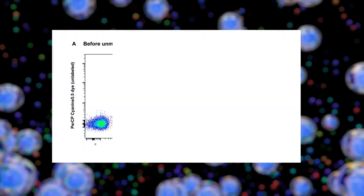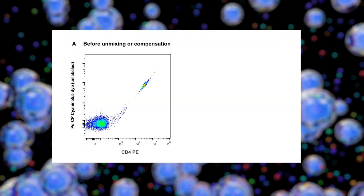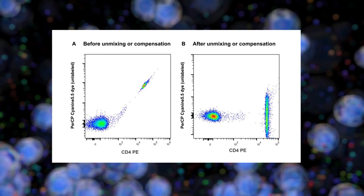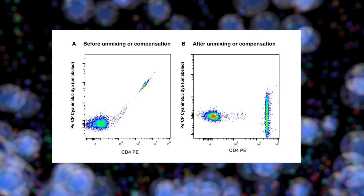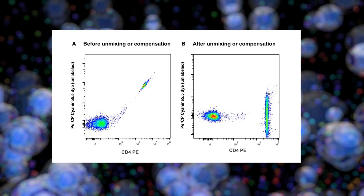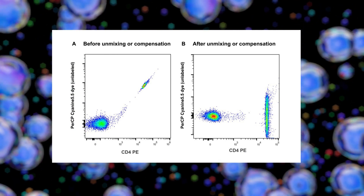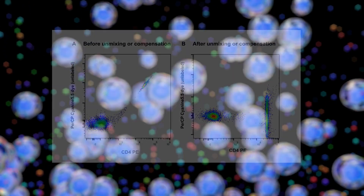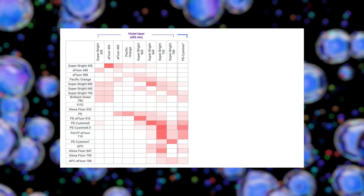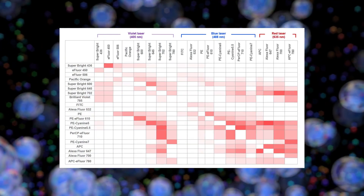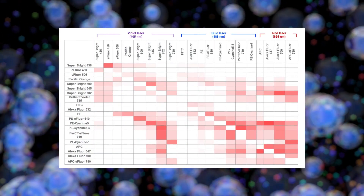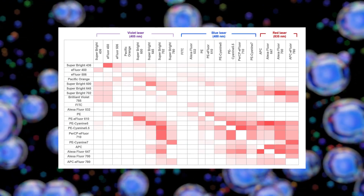When similar fluorophores are used together, spreading of the positive population can be observed even after compensation or spectral unmixing is applied. Careful panel design for spectral flow cytometry requires an understanding of the cytometer characteristics and fluorochrome properties.